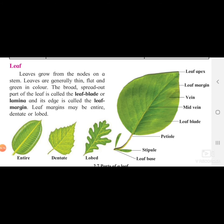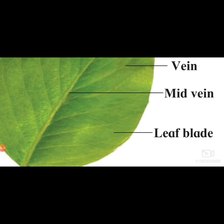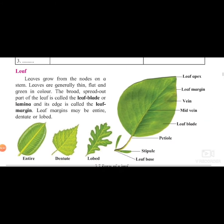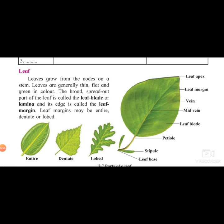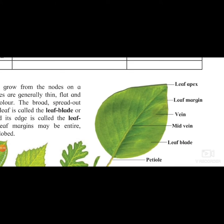Leaves are green in color because of the chlorophyll present in them. The broad, spread-out part of the leaf is called the leaf blade, also known as the leaf lamina - you can see it labeled in the diagram. The edge or border surrounding the leaf is called the leaf margin, which is also mentioned in the diagram.